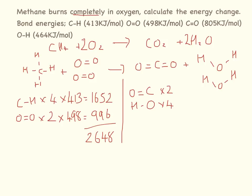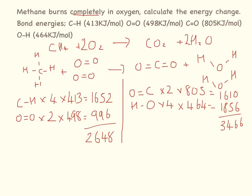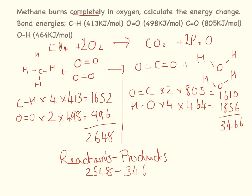Moving on to the product side: the C=O double bond energy is 805 kJ/mol, and we have four of those — but note there are two per CO₂ molecule — so 4 × 805 = 3,220. Wait, actually there are two C=O bonds total in one CO₂ giving 2 × 805 = 1,610. We have four O-H bonds with bond energy 464 kJ/mol: 4 × 464 = 1,856. Adding those: 1,610 + 1,856 = 3,466 kJ/mol. Reactants minus products: 2,648 − 3,466 = −818 kJ/mol. This is exothermic.